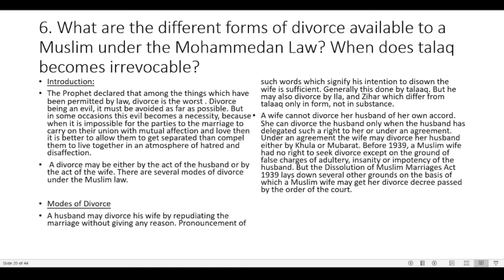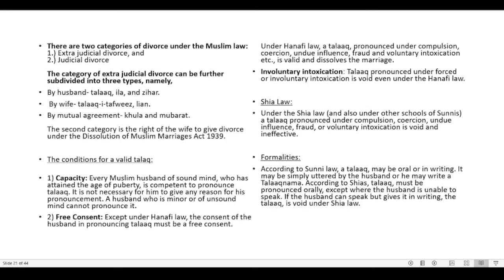A husband may divorce by talaq, or by ila and zihar — which differ from talaq only in form, not substance. A wife cannot divorce her husband of her own accord; she can do so only when the husband has delegated such right to her, or under an agreement by khula or mubara. Before 1939, a Muslim wife had no right to seek divorce except on the grounds of false charges of adultery, insanity or impotency. The Dissolution of Muslim Marriages Act 1939 lays down several other grounds on which a Muslim wife may get a divorce decree. There are two categories of divorce under Muslim law: extrajudicial divorce and judicial divorce. Extrajudicial divorce is subdivided into: by husband (talaq, ila, zihar); by wife (talaq-e-tafwiz or lian); and by mutual agreement (khula and mubara).